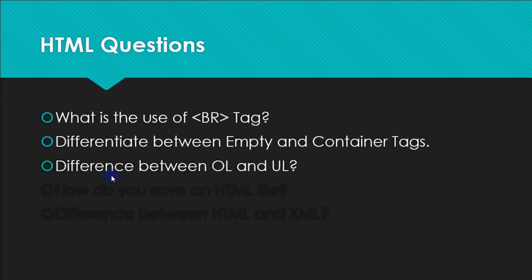Then difference between OL and UL that's ordered list and unordered list. Ordered list shows the points with numbers in front of them and unordered list shows the points with bullets in front of them. Like this list which has been displayed here is an unordered list.